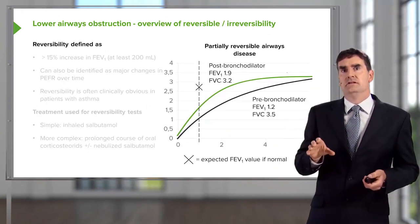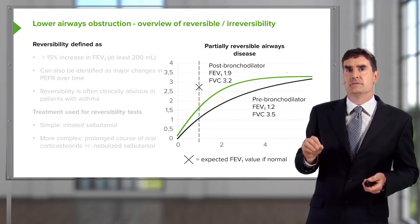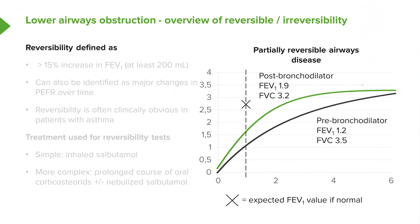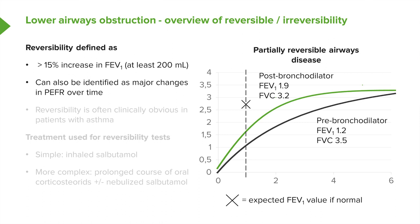To talk about reversibility in a bit more detail, as this is a fundamental concept for airways obstruction: what we mean by reversibility is that if there's a 15% increase in your forced expiratory volume in one second — FEV1, a measure of airflow on expiration — and that's at least 200 mLs, then there is a degree of reversibility present. If that reversibility with treatment actually improves your FEV1 to the expected level for somebody of your age, sex, and height, then that would be a fully reversible situation. But if it only goes part of the way to your expected FEV1, then that's partially reversible.